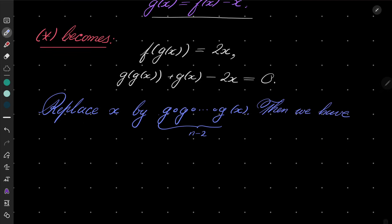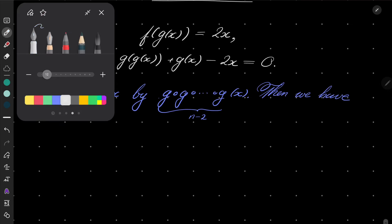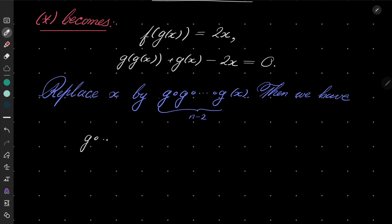We have the following equation: g composed with itself n times of x plus g composed with itself n-1 times minus 2 times g composed with itself n times equals zero.